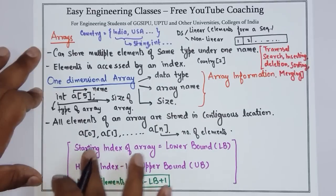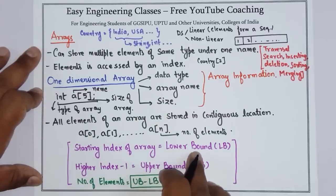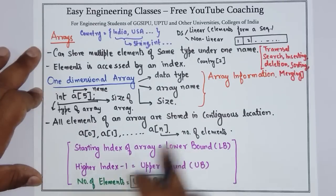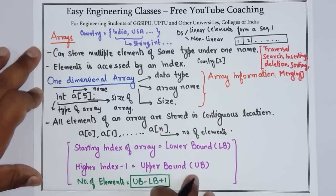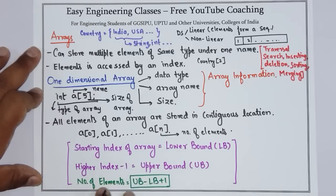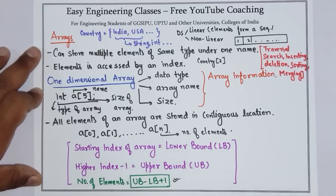The starting index of the array is known as the lower bound, and the highest index is the upper bound. The number of elements equals upper bound minus lower bound plus one. This you have to remember.